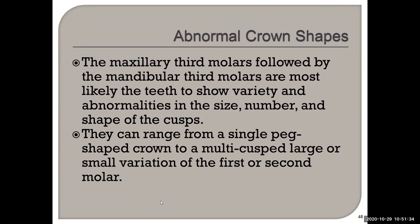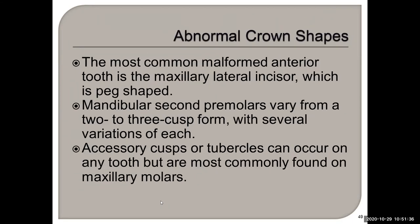There are lots of different crown shapes. The most common malformed anterior tooth is the maxillary lateral, which is often peg-shaped. The most common missing anterior tooth is also the maxillary lateral. If not the lateral, then the mandibular second premolars vary from two to three cusp form with several variations of each.